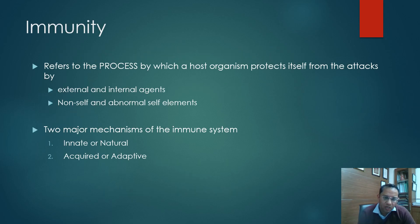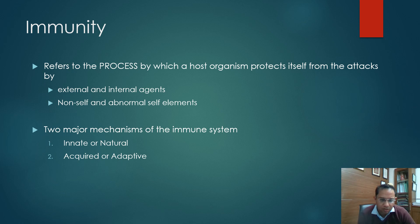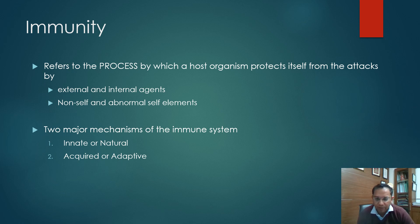Immunity — what is immunity? It refers to the process by which a host organism protects itself from attack by both external and internal agents, and from non-self and abnormal self elements. There are two major mechanisms of the immune system: innate or natural immunity, and acquired or adaptive immunity.